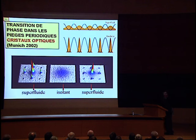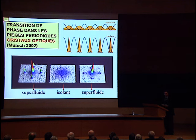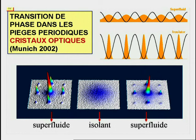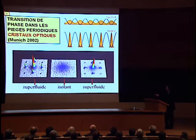Si la puissance du laser n'est pas très grande et donc que la barrière qui sépare deux puits proches voisins est faible, les fonctions d'ondes des atomes confinés dans ces puits se recouvrent et le système globalement se comporte comme un superfluide. En revanche, si la puissance du laser est grande, le recouvrement est très petit et le système perd ses propriétés superfluides, il se comporte plutôt comme un isolant. La transition entre la phase superfluide et la phase isolante fut mise en évidence dans cette expérience remarquable faite à Munich en 2002.